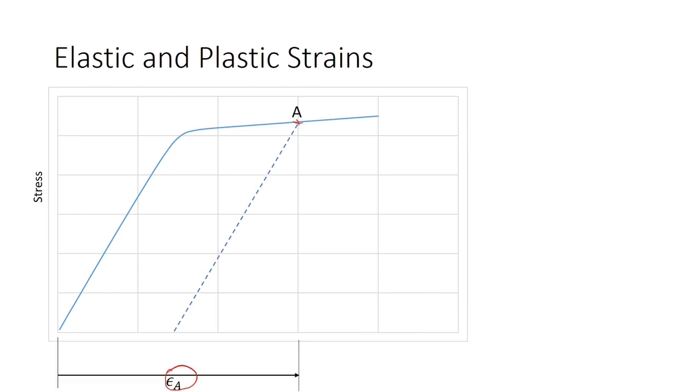And after unloading, we are left with this much amount of strain. In other words, we have recovered this much amount of strain upon unloading and by definition, it is the elastic portion of the strain. This portion here, the yellow line, is the permanent deformation after unloading and this is the plastic portion of the strain. So we have epsilon A as a sum of elastic and plastic strains.